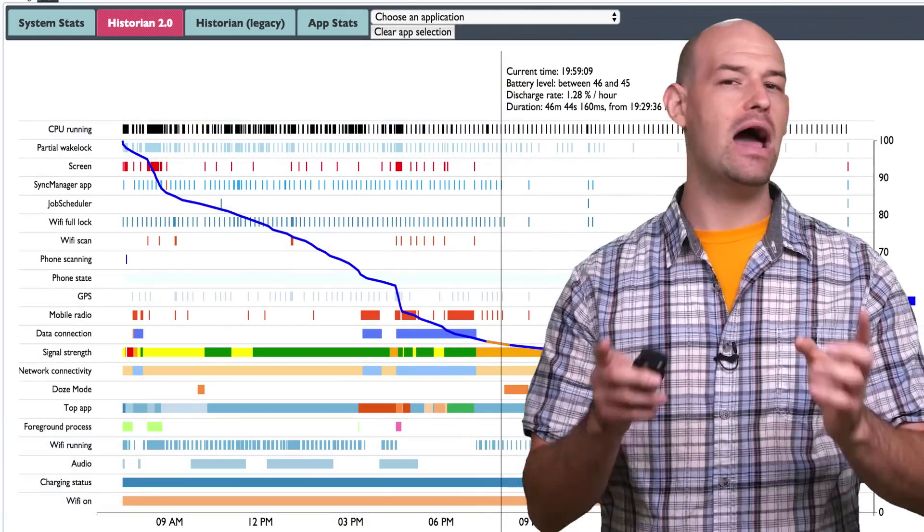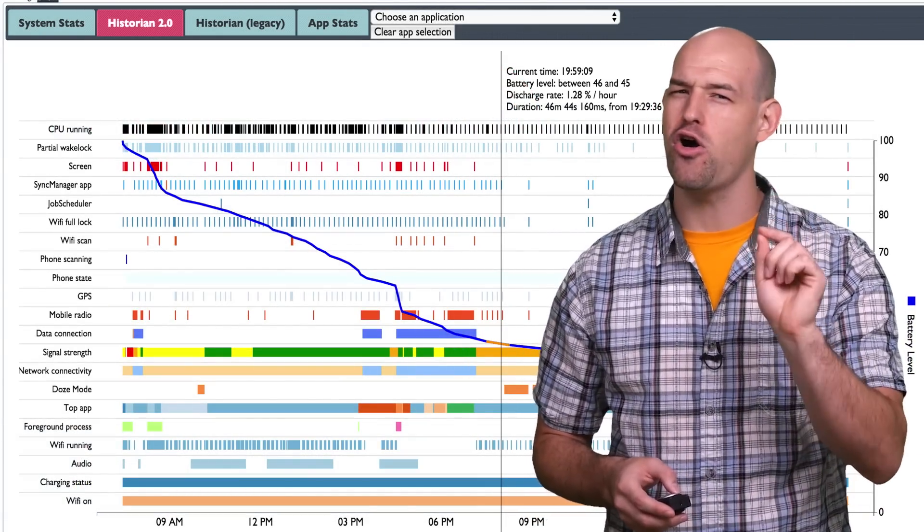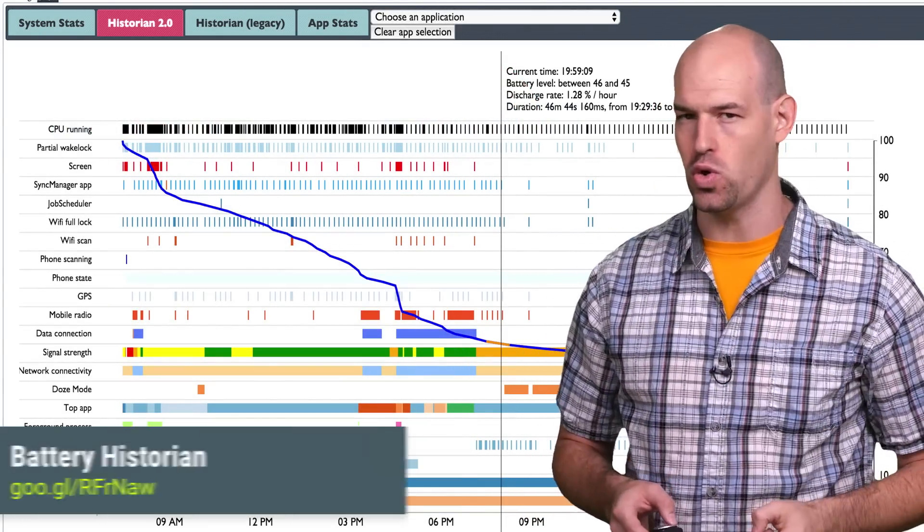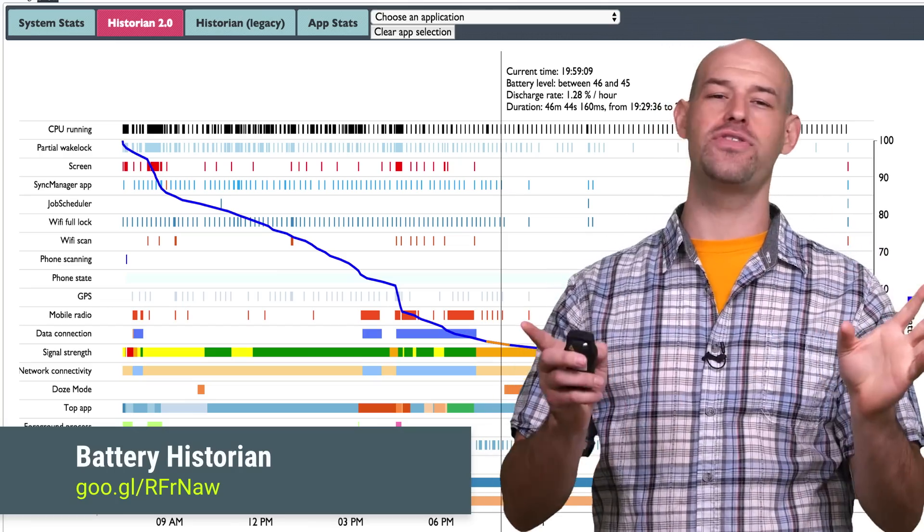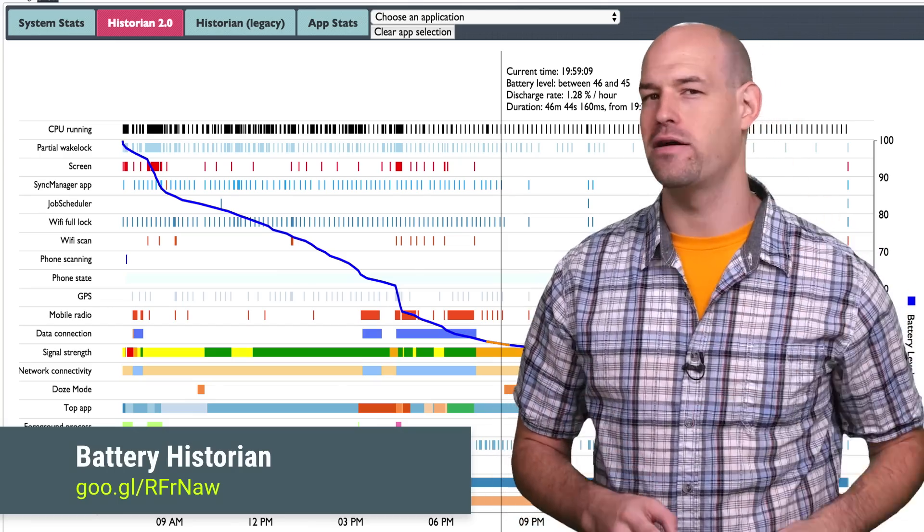If you're ever confused about how your application is eating through battery, always be sure to take a hard look at the Battery Historian tool. It will happily remind you of all the things you're doing wrong and give you hints on how to get them fixed.